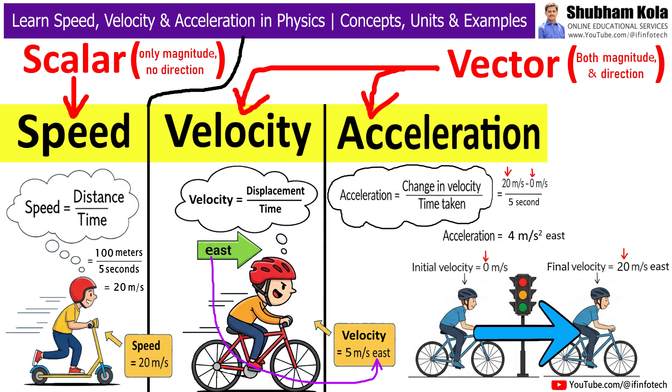If you slow down, the acceleration becomes negative and we call it deceleration. Acceleration is measured in meters per second square. And because it depends on velocity which has direction, it is also a vector quantity.